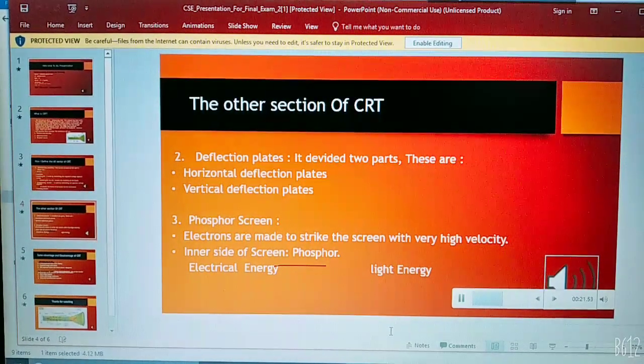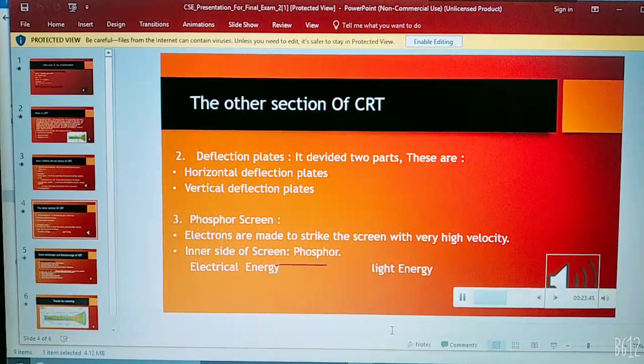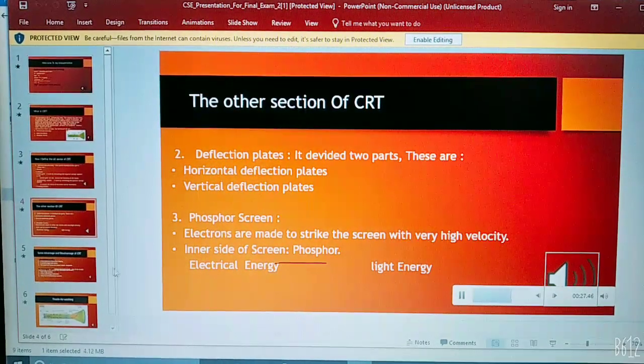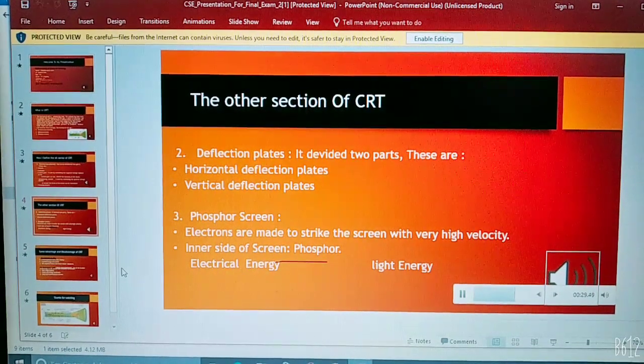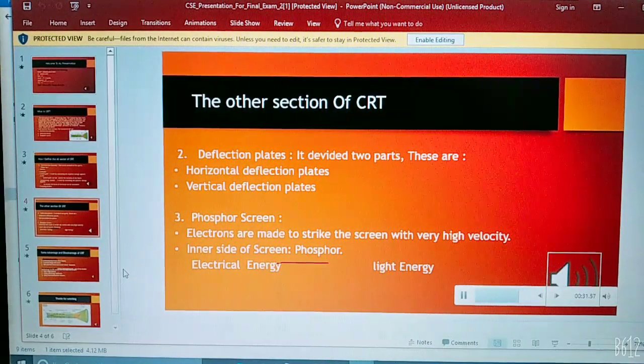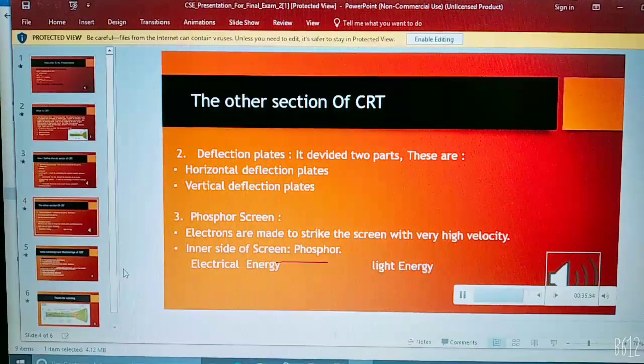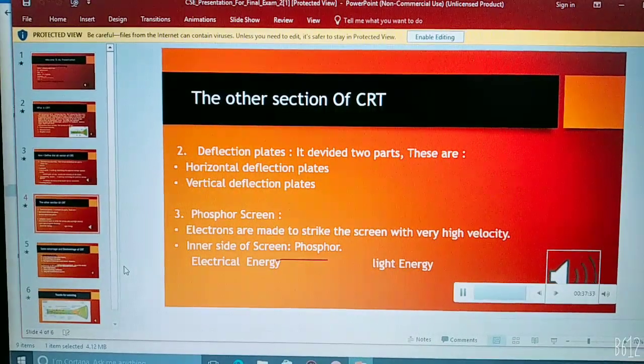The third section is phosphor screen. It works: firstly, electrons are made to strike the screen with very high velocity. And second, inner side of screen has phosphor. It converts electrical energy to light energy.